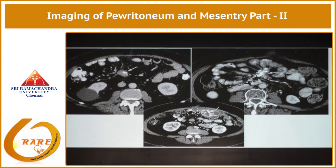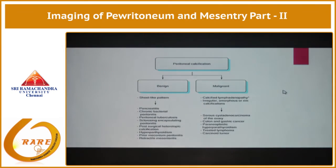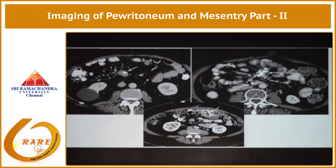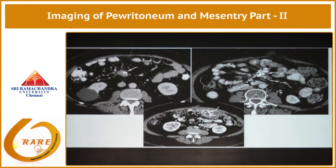What is this case here? Sclerosing mesentritis. There's also associated myelopaniculitis here. Can you see here? That's a fat ring sign. This again causes coarse calcifications, and it is retractile in nature. So it can cause desmoplastic reaction and tethering of bowel loops.